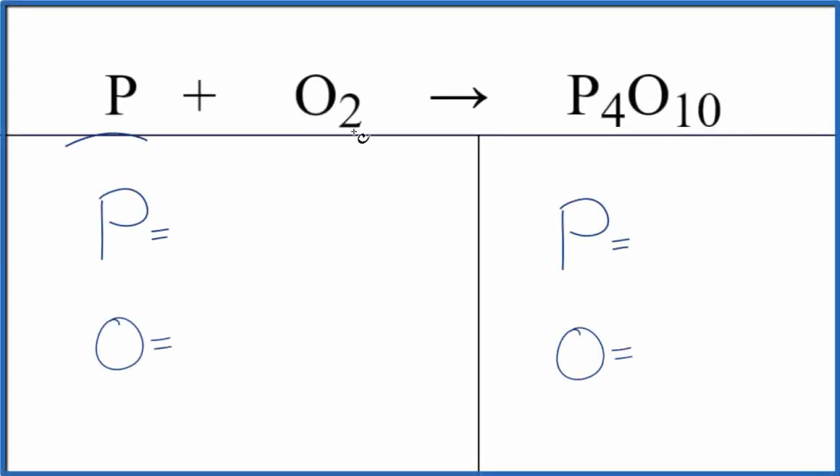Let's balance the equation P plus O2 gives us P4O10. We'll also look at the type of reaction and the states.